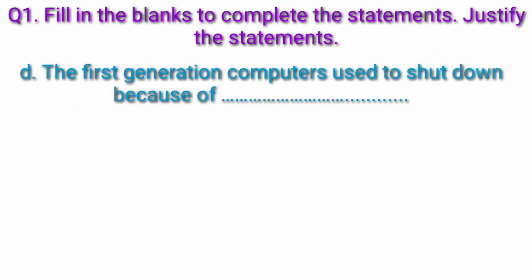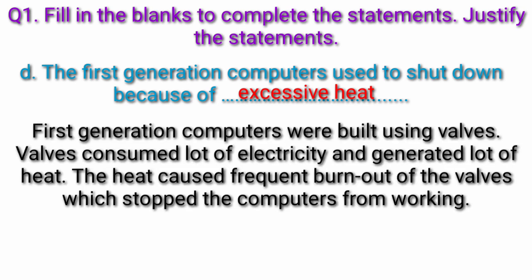Question d: The first generation computers used to shut down because of fill in the blanks. Answer: Excessive heat. First generation computers were built using valves. Valves consumed lot of electricity and generated lot of heat. The heat caused frequent burn out of the valves which stopped the computers from working.